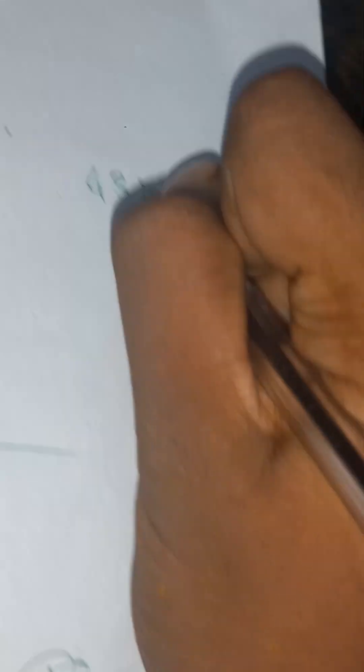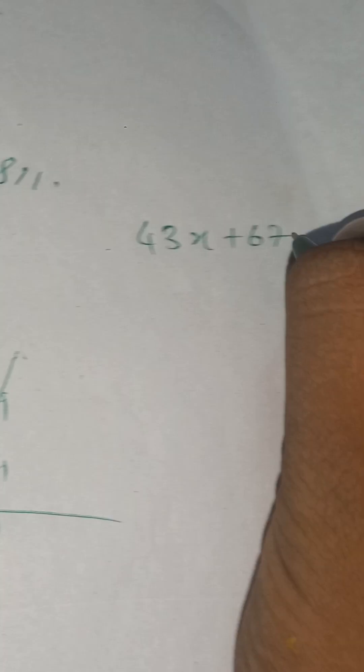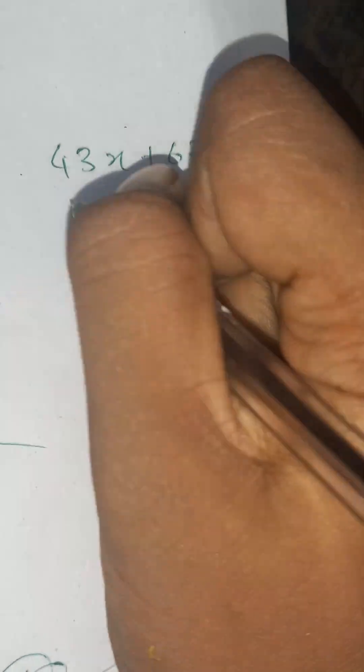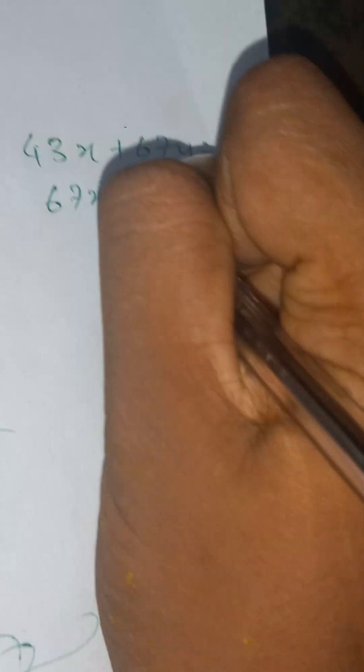We have to subtract both of these equations. So what you will get after subtracting is -24x + 24y.